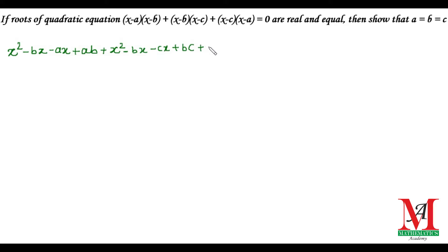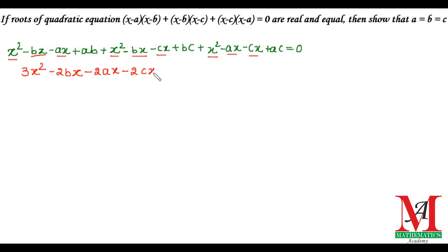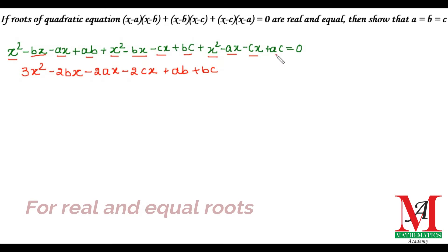Also on multiplying the remaining two terms we get x squared minus ax minus cx plus ac, equals zero. Now on simplification, x squared appears three times, so on adding we get 3x squared. Then bx and bx on adding give minus 2bx. Minus ax with minus ax gives minus 2ax. Plus ab appears one time only.